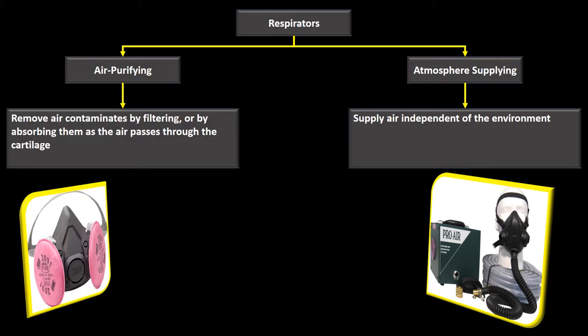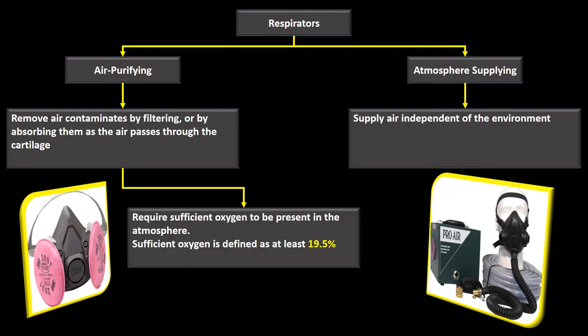An air purifying respirator removes air contaminants by filtering or absorbing them as they pass through a cartridge. It uses the air already in the atmosphere but filters it as it comes in through some sort of cartridge system.